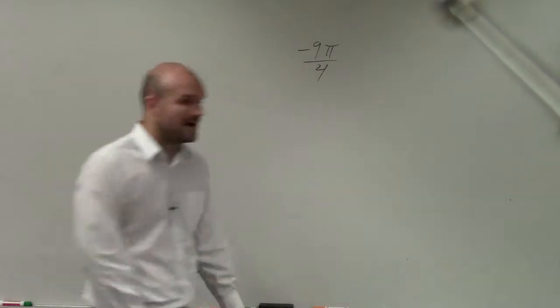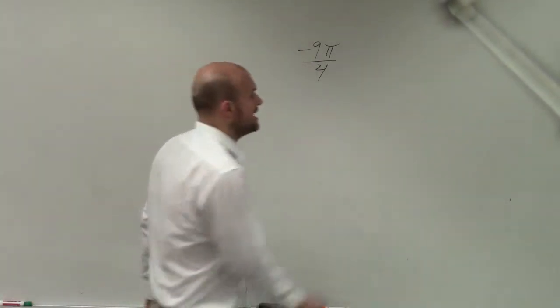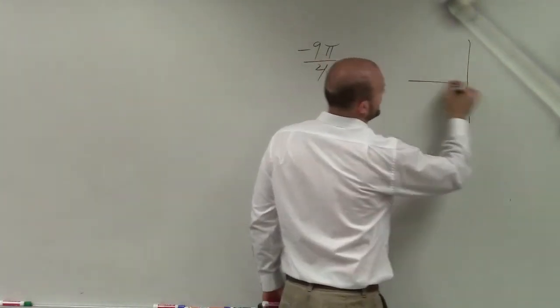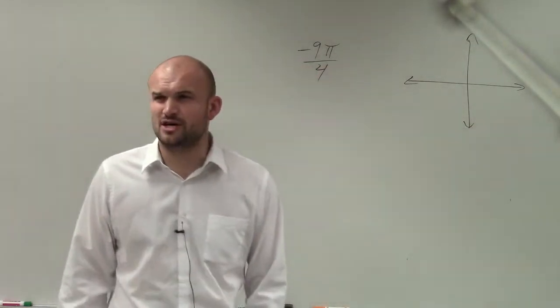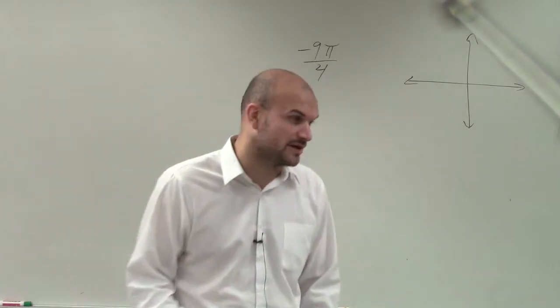So we have our coterminal angles, negative 9 pi over 4. Again, let's go and graph where is negative 9 pi over 4. So now we're talking about radians, not degrees. It gets a little bit more tricky when you start looking into radians because we just started talking about radians.